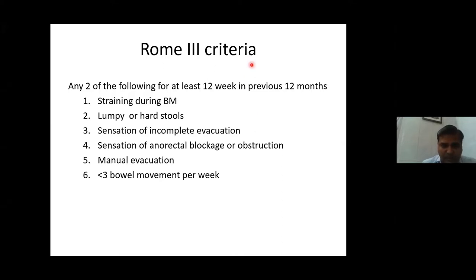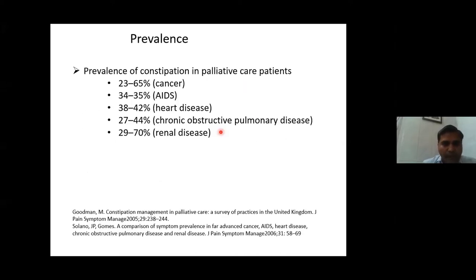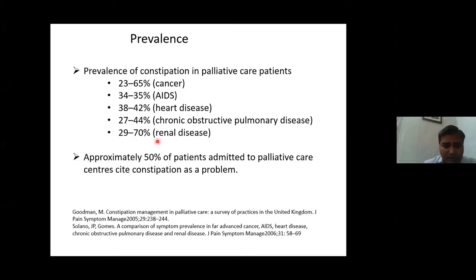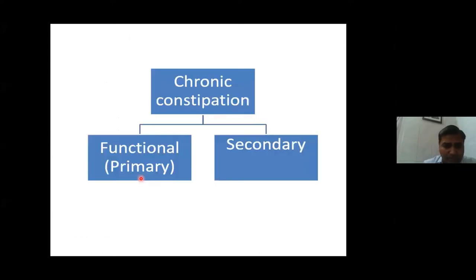Almost 20 to 65 percent of cancer patients will have constipation. AIDS, heart disease, and COPD patients have around 35 to 40 percent constipation rates, while chronic renal disease has up to 70 percent prevalence. Almost 50 percent of patients presenting to palliative care will cite constipation as a problem.